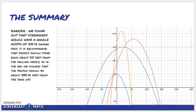The summary: we found out that fireworks would have a total width of 213.46 square feet. It is recommended that people should stand back about 25 feet from the falling debris. So in the end, we figured that people should be about 238.46 feet from the takeoff, which in this case would be the vertex.